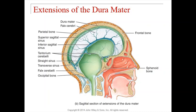Starting with the falx cerebri — it runs in the longitudinal fissure, the deep groove going right down the middle of the brain, between the two cerebral hemispheres. Then there's the falx cerebelli, found between the two halves of the cerebellum. Their names give you a hint about where to find them: the falx cerebri between the two halves of the cerebrum, and the falx cerebelli between the two halves of the cerebellum.